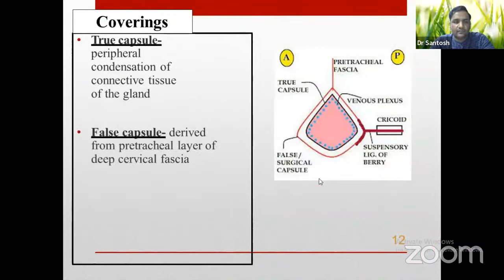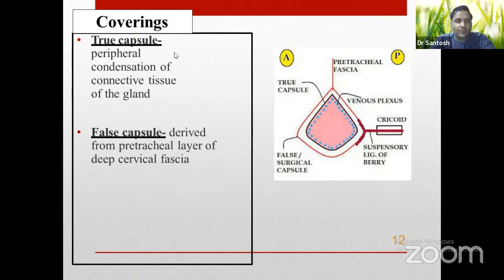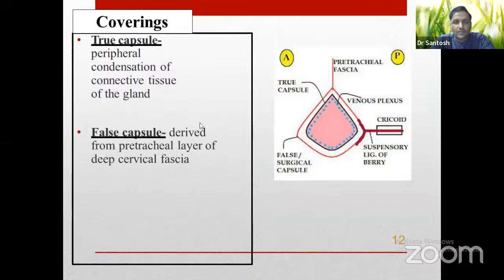Coming to the coverings: the thyroid gland has two coverings — a true capsule and a false capsule. The true capsule is a condensation of the connective tissue of the gland itself. The false capsule is derived from the pre-tracheal layer of the deep cervical fascia. The deep cervical fascia has three layers: the outer investing layer, the pre-tracheal layer, and the pre-vertebral layer.